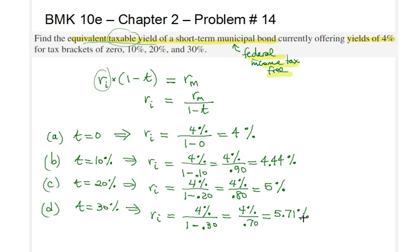So that actually solves our problem. We were able to find equivalent taxable yield for our municipal bond for different tax brackets. Hope to see you in our next video.